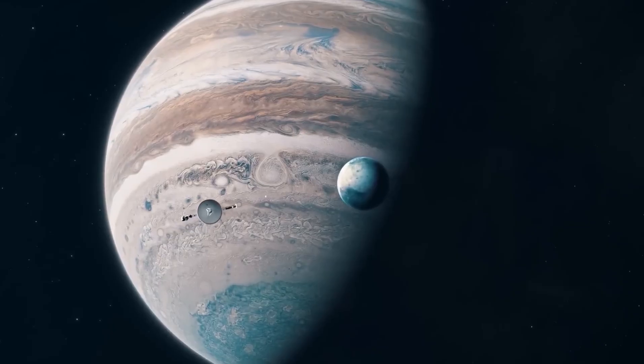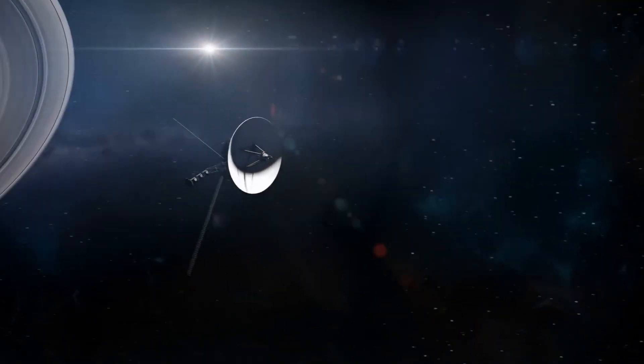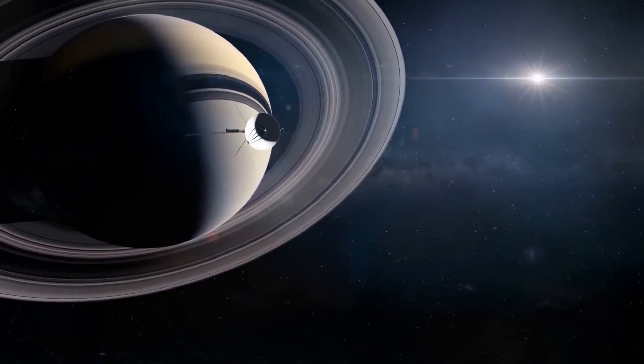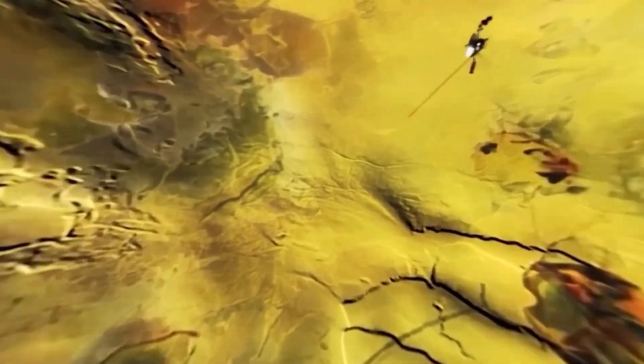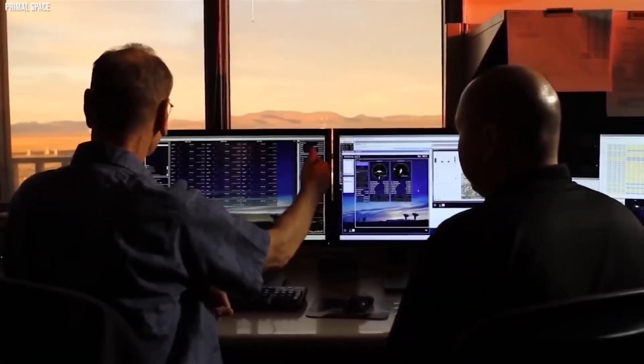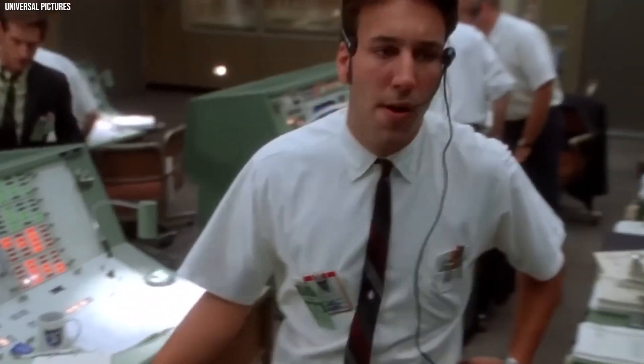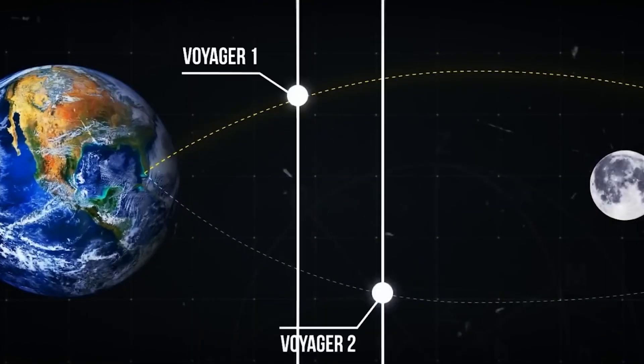However, there was a catch. This alignment occurred only once every 176 years. Faced with such an exceptional opportunity, NASA acted quickly, and just 15 days apart, they launched two identical spacecraft, Voyager 1 and Voyager 2.